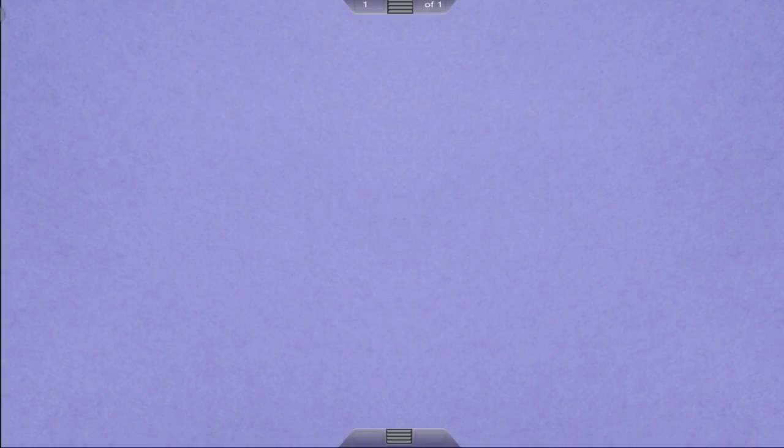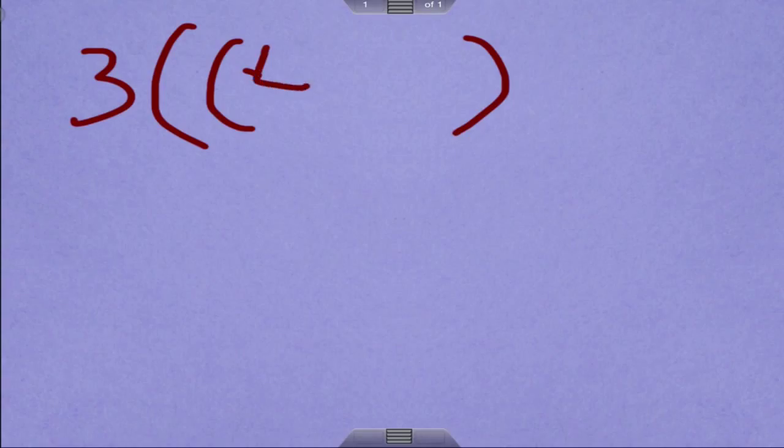All right, a couple more. We're going to do something called a nested parentheses. So it's a parentheses inside a parentheses. So I'm going to write 3 times, we have a parentheses here, another parentheses, 4 plus 3. And we're going to square the whole thing.